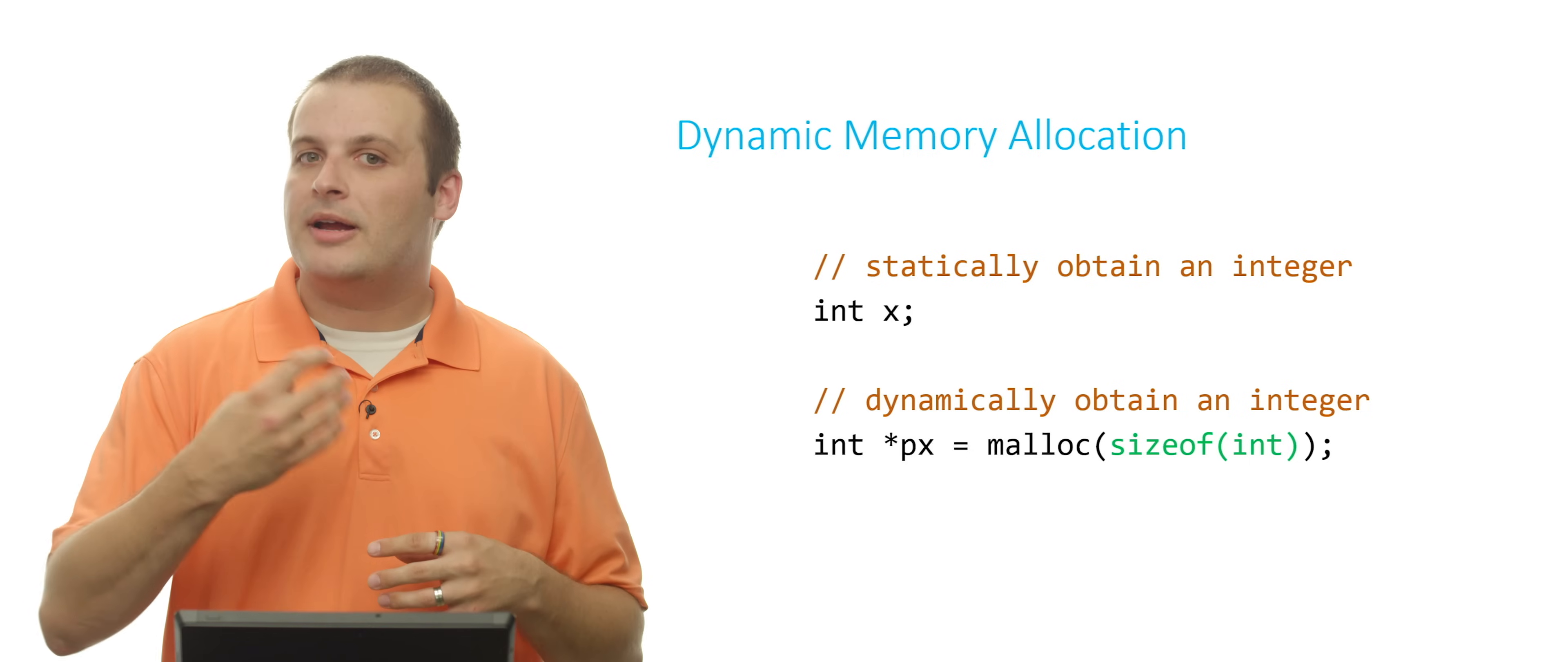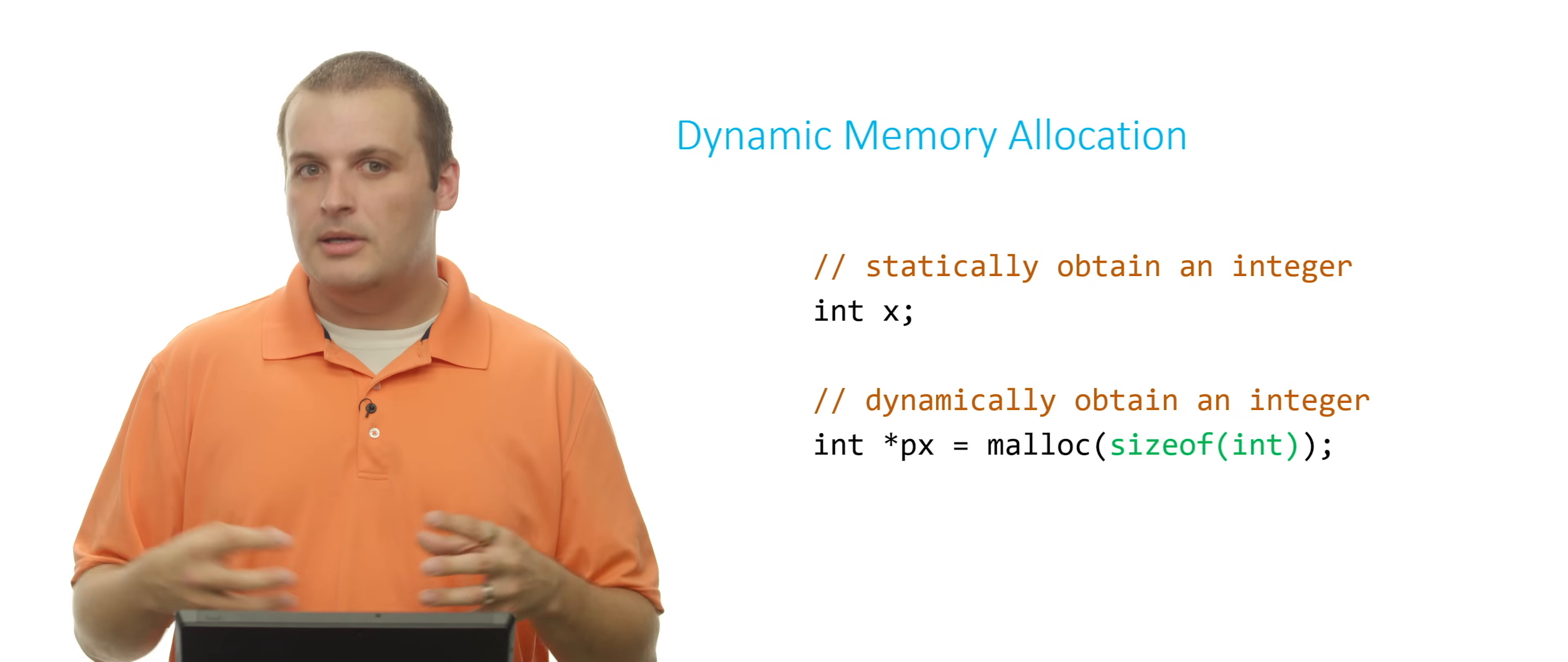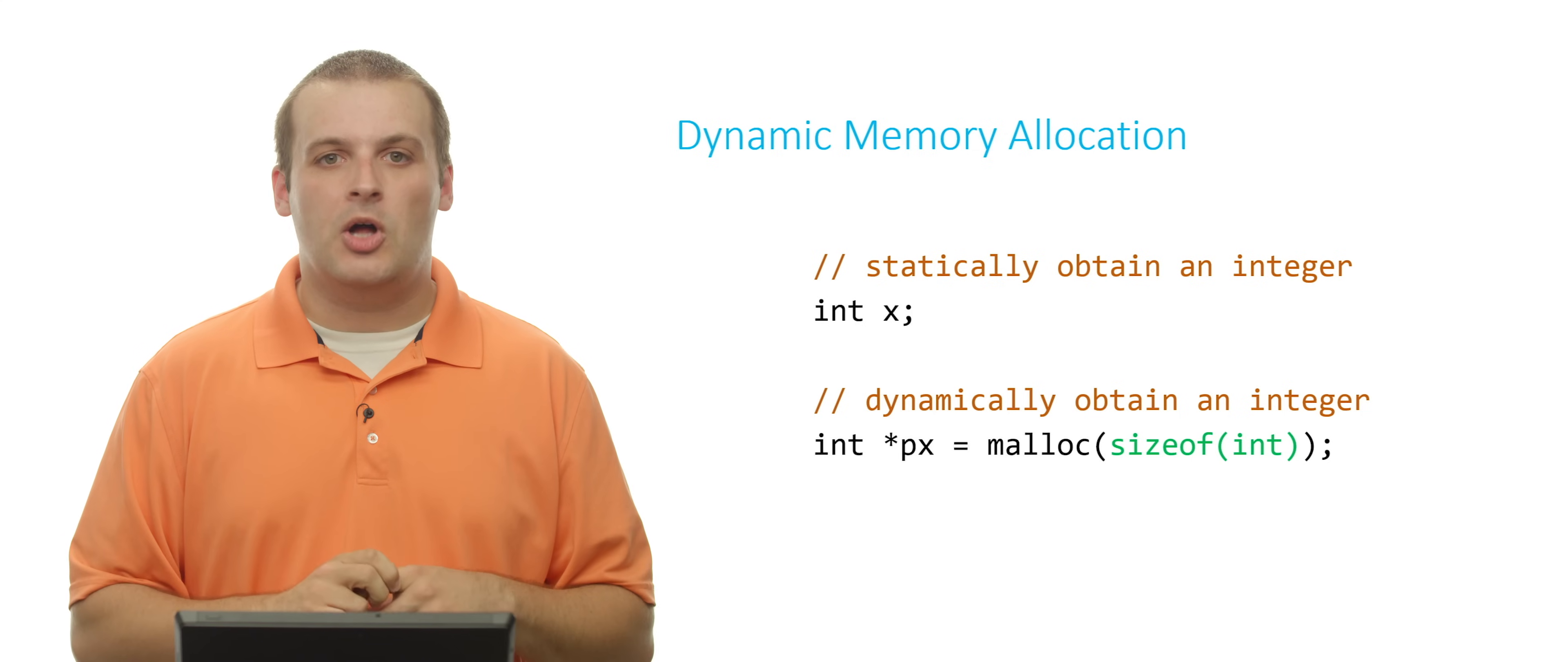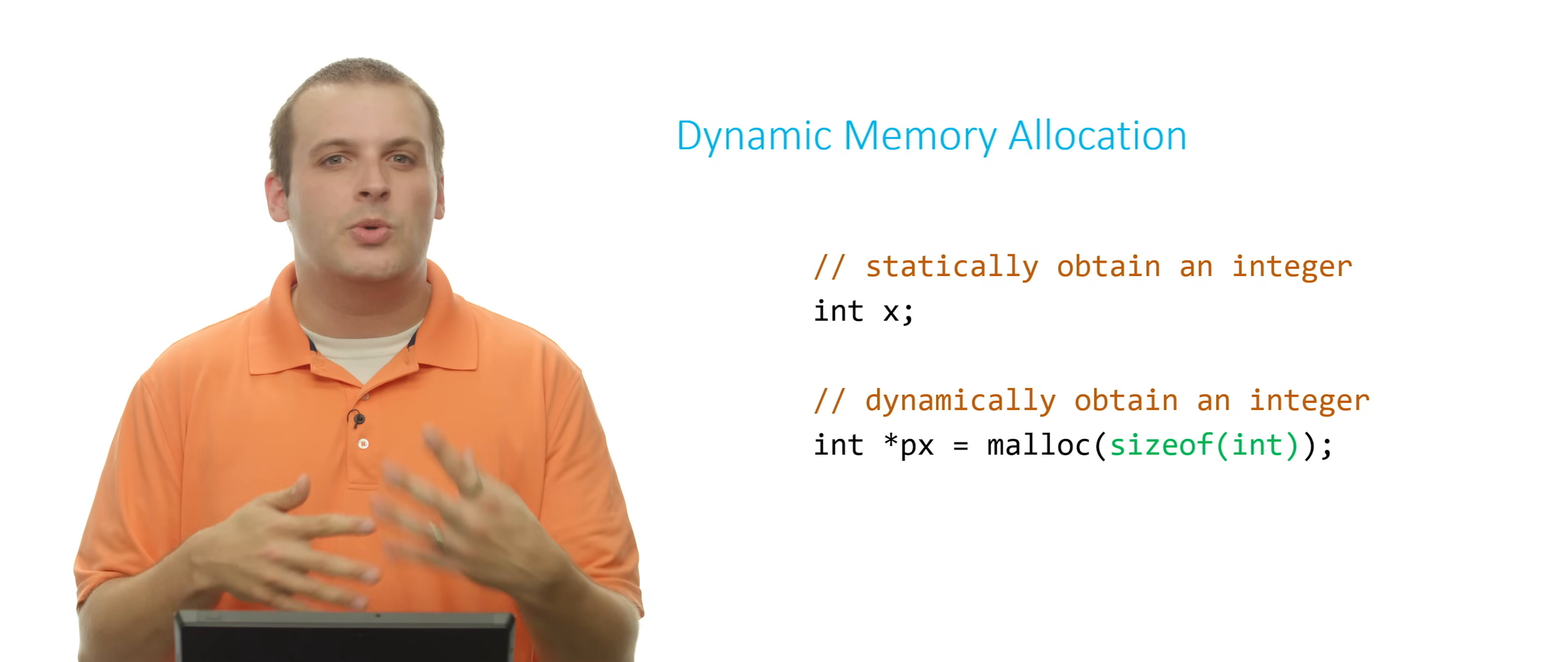Basically means malloc is going to go try and find you four bytes of memory that are next to each other on the heap. And then malloc will return to you a pointer to that memory called px. And then we could dereference that pointer, as we've seen in the pointers video, to manipulate it, to put a value in there, to do whatever we want to do with it.